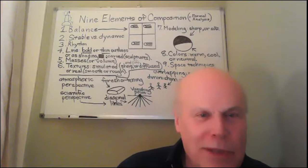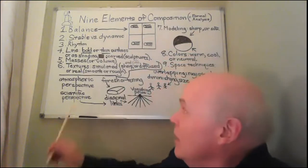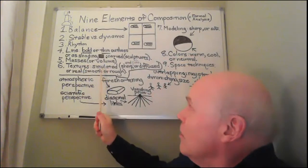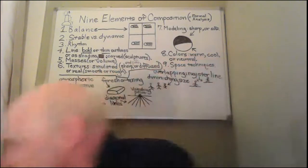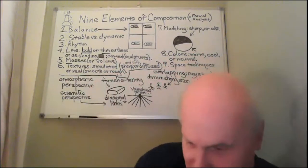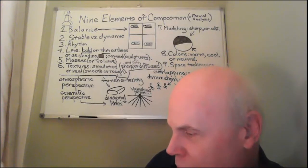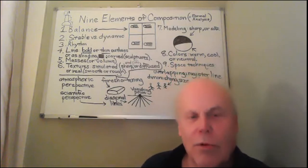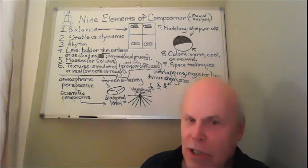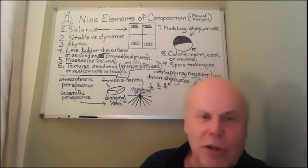Now we're going to get to the more complex — textures. This one takes a little more analysis. Textures can be two main categories — simulated or real. Simulated textures is when an artist uses paint — and that might mean the artist uses shading, line, and color to create the illusion of real textures in that two-dimensional work of art. We're talking about a painting or drawing first.